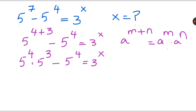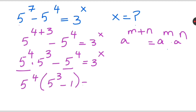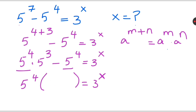On the left hand side, both terms have 5 raised to 4 of 4 as common. So let's take 5 raised to 4 of 4 as common. Then we are left with 5 raised to 4 of 3 minus 1. We know that 5 raised to 4 of 3 is 125, so 125 minus 1 gives 124.